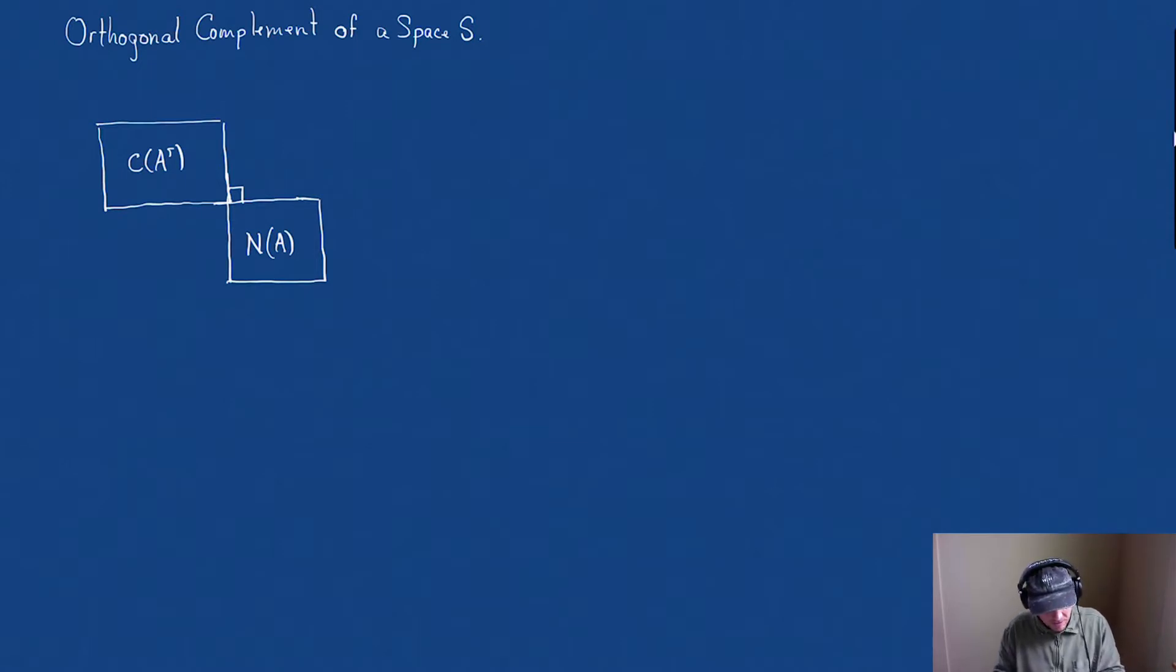So what we would say is the orthogonal complement of the null space of A is all vectors perpendicular to the null space of A. Well, we already know what that is. All the vectors perpendicular to the null space of A is the row space, the column space of A transpose.